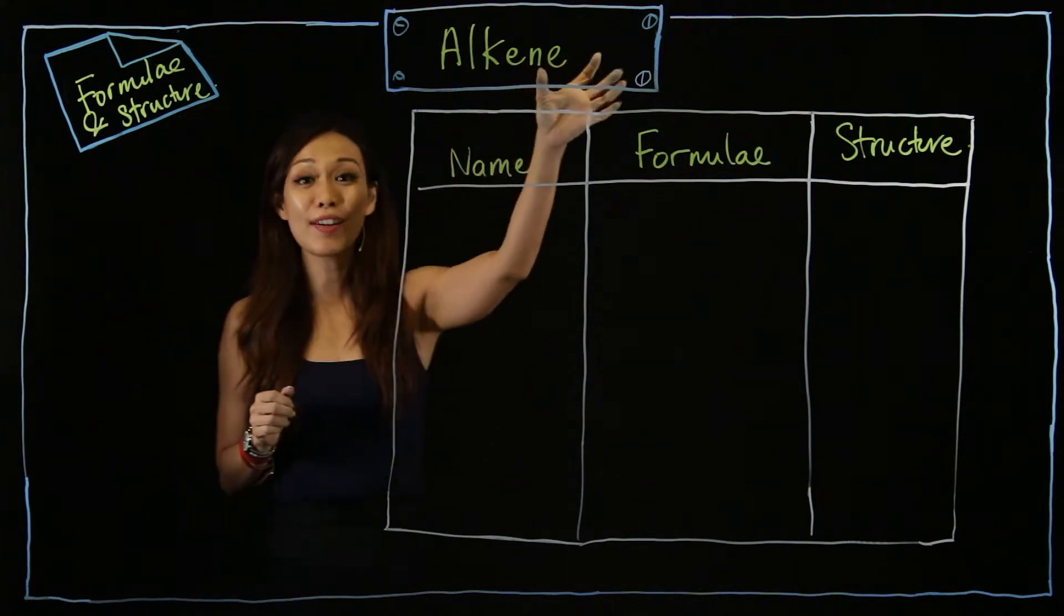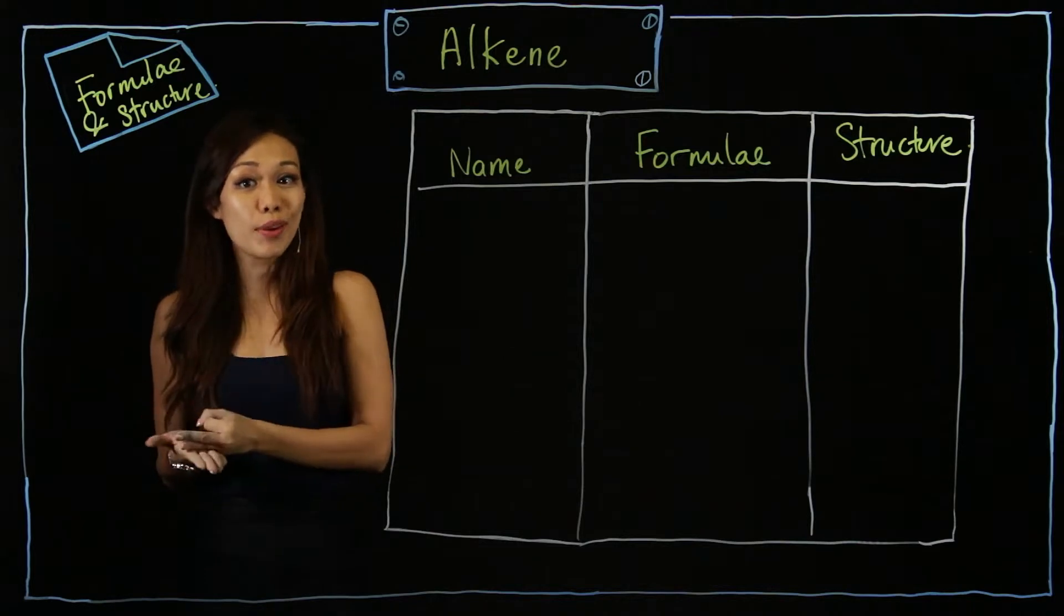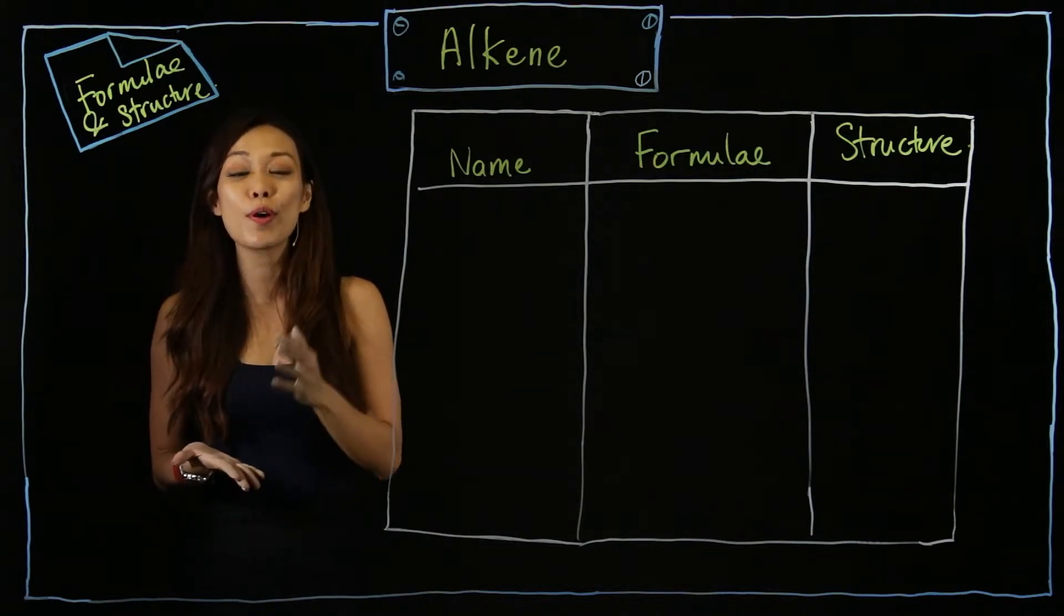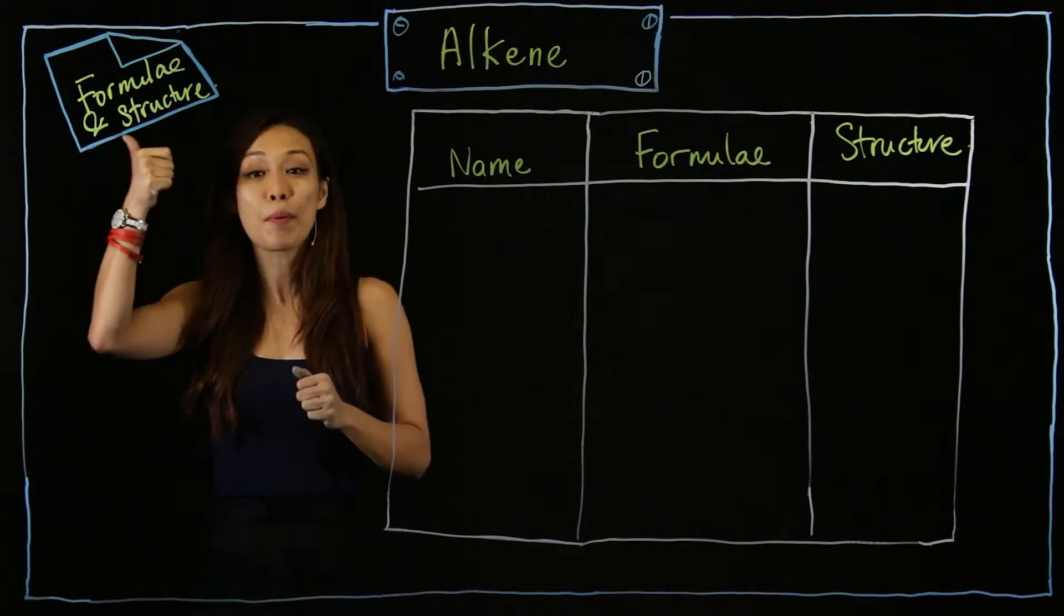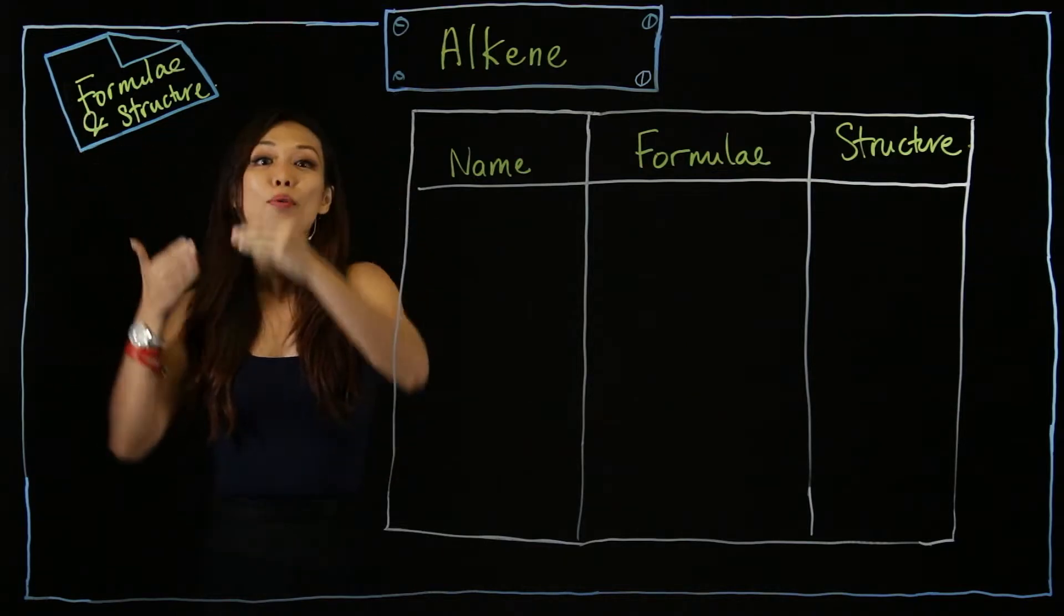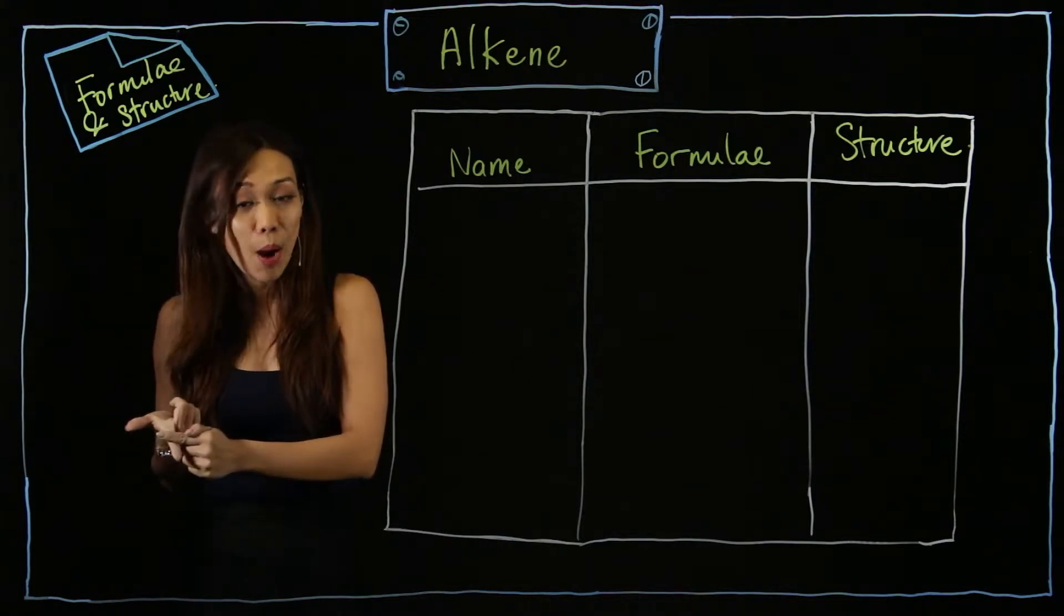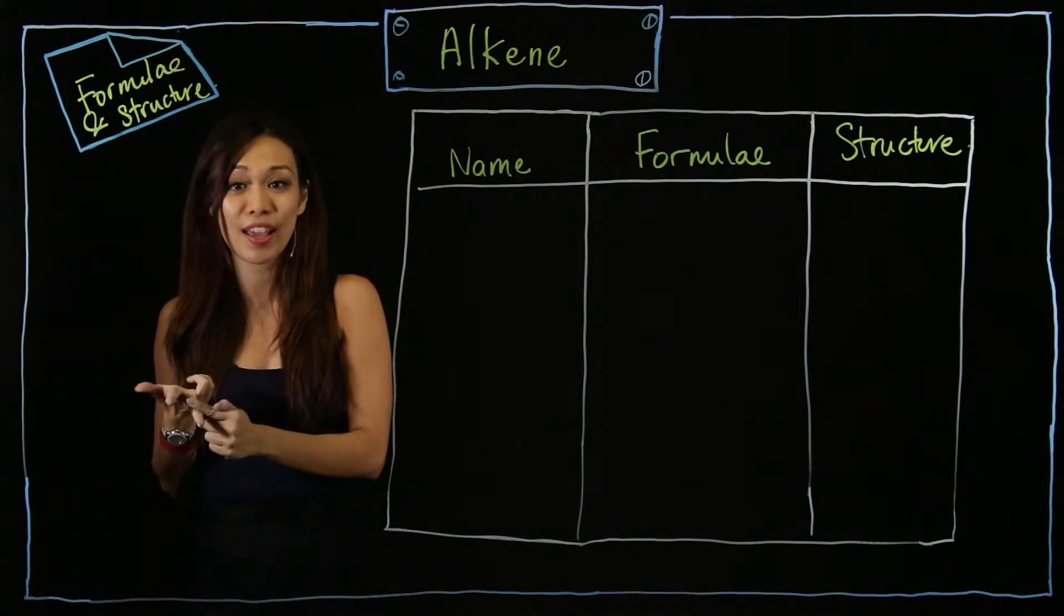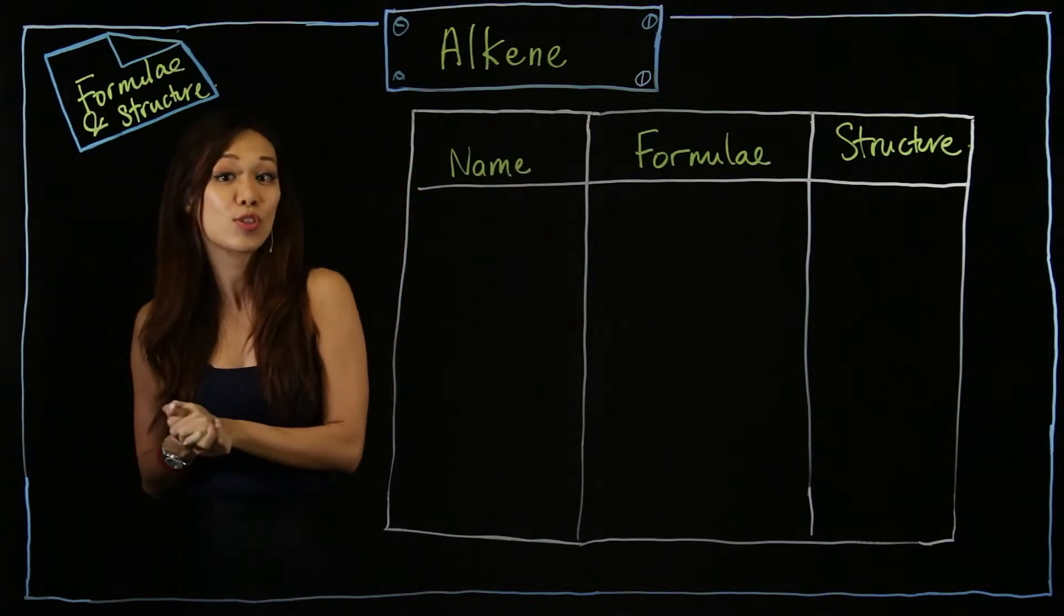Now let's go through alkene. Remember, I mentioned there are three things to take note when doing organics. What are the three main points? You must always remember: when you study it, always look for formula and structure, followed by their physical property and chemical property. Same thing for alkene. Let's start with the formula and structure.